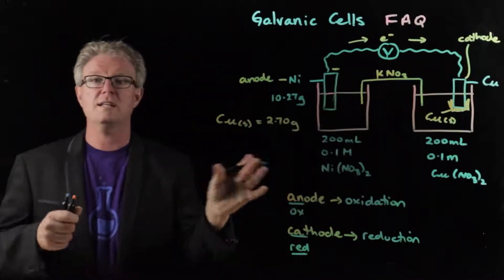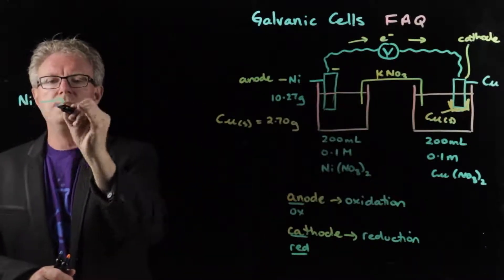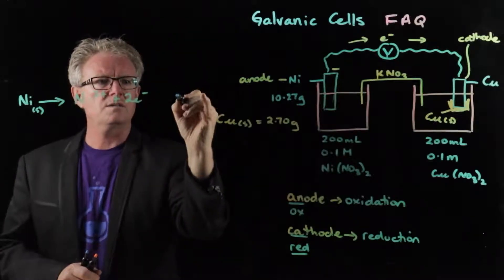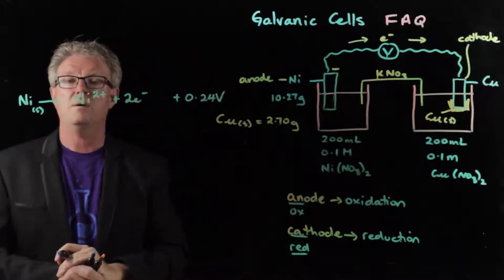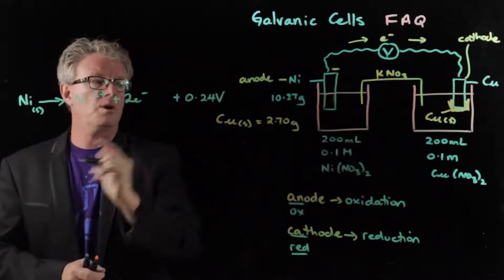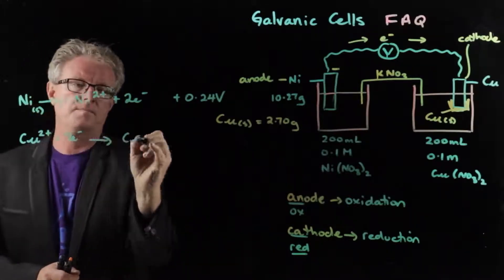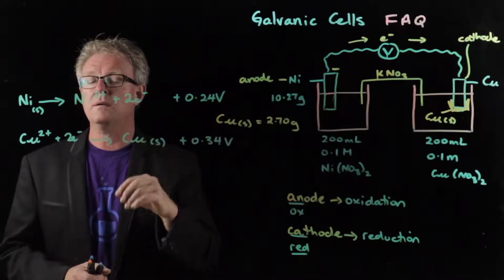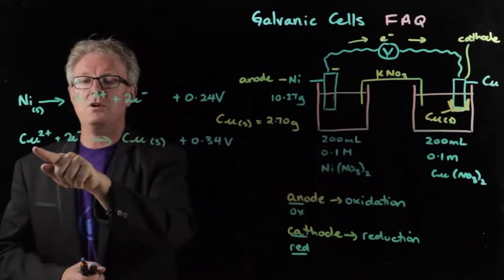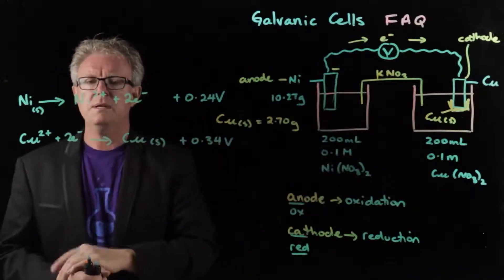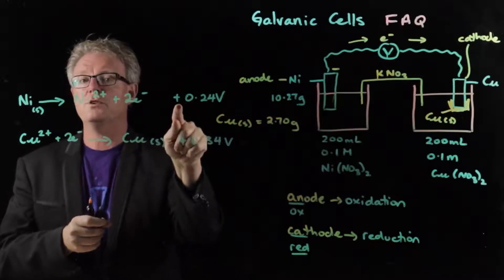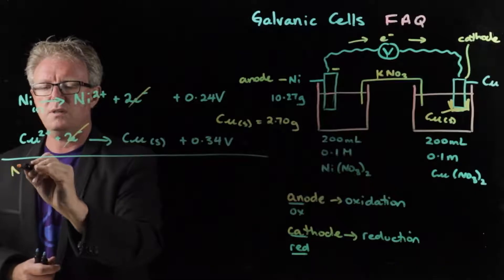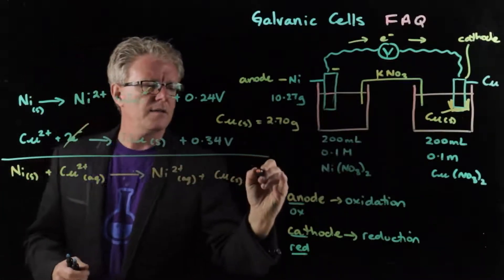To write the equation, we know oxidation is occurring at the anode — that's nickel. We had to reverse nickel, so its potential is positive 0.24 volts from the standard reduction potential table. For copper, make sure you're using the right one — there's copper 1 and copper 2, and here it's copper 2, so use the correct half equation. We've reversed nickel because it's being oxidized, so we reverse the sign. Adding the two half equations together, the electrons cancel out, giving us the overall cell equation and E cell = 0.58 volts.